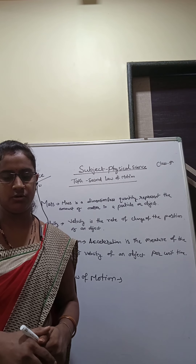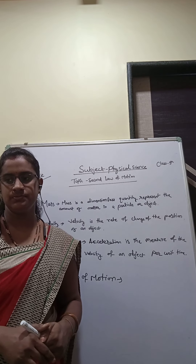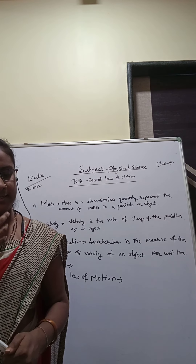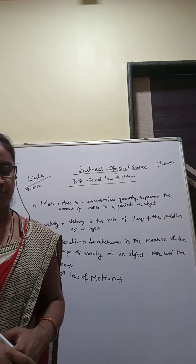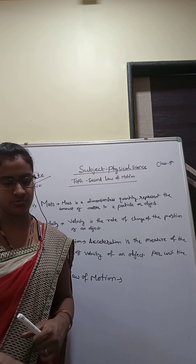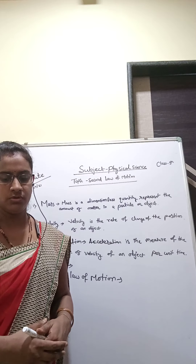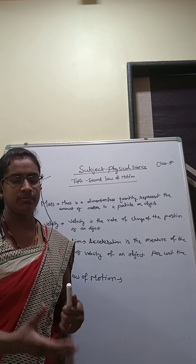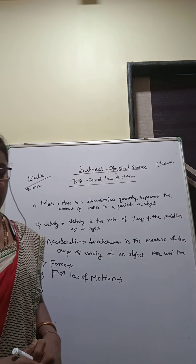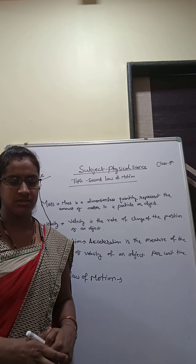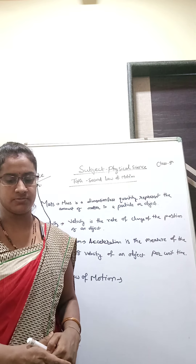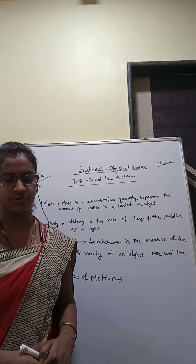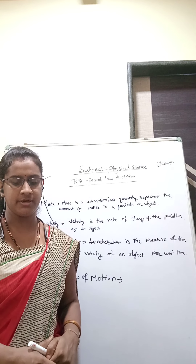Now tell me about the second law of motion. The first law of motion indicates that when an unbalanced external force acts on an object, its velocity changes — that is, the object gets acceleration. We would now like to study how the acceleration of an object depends on the force applied on it.